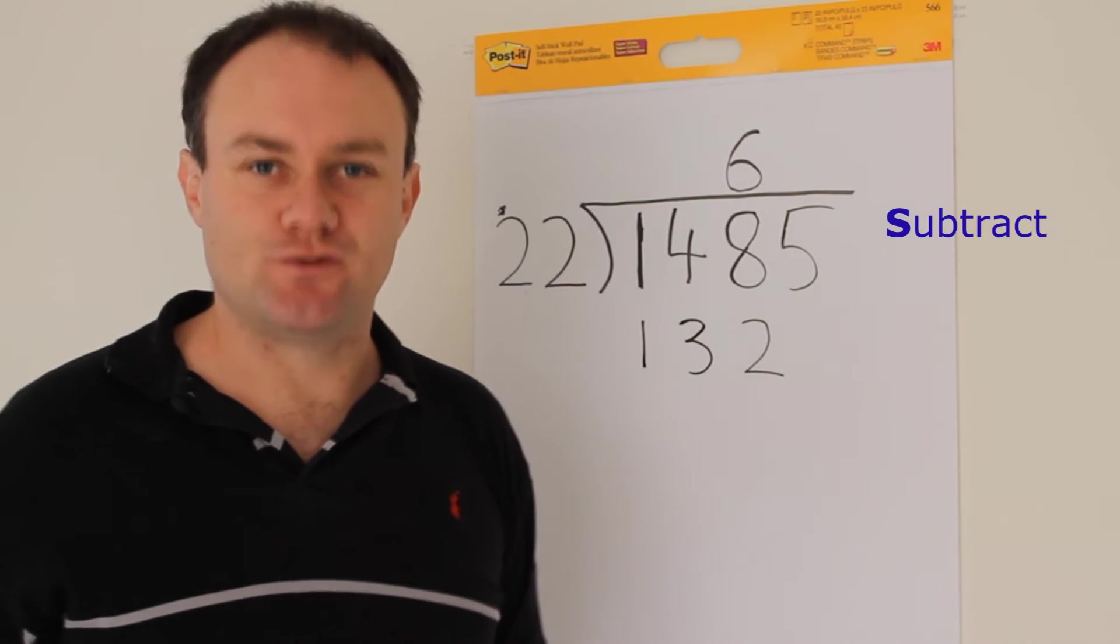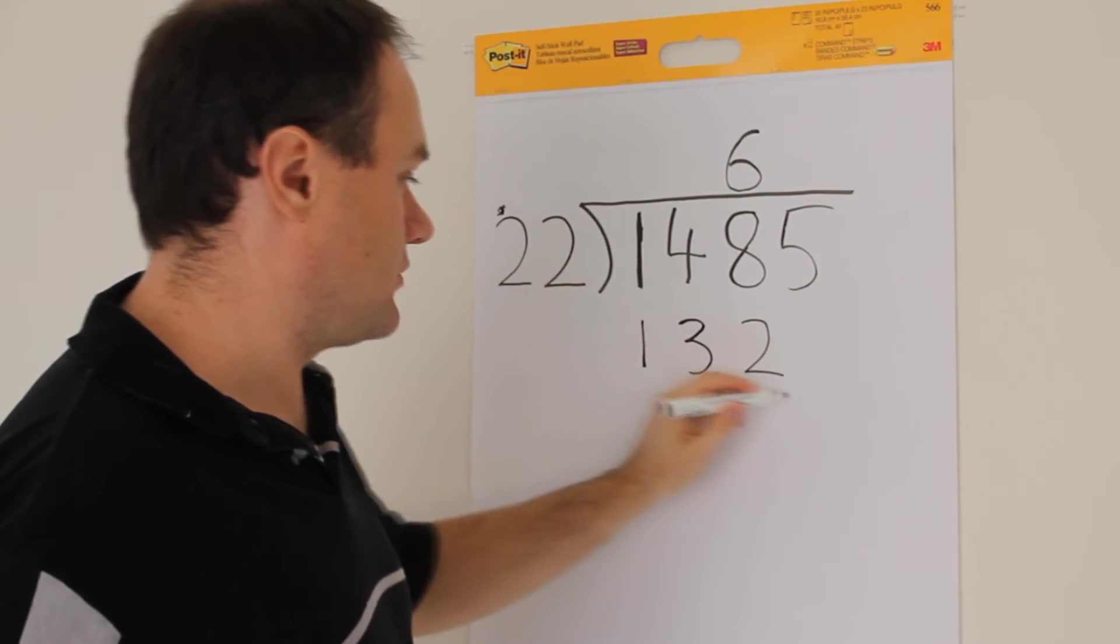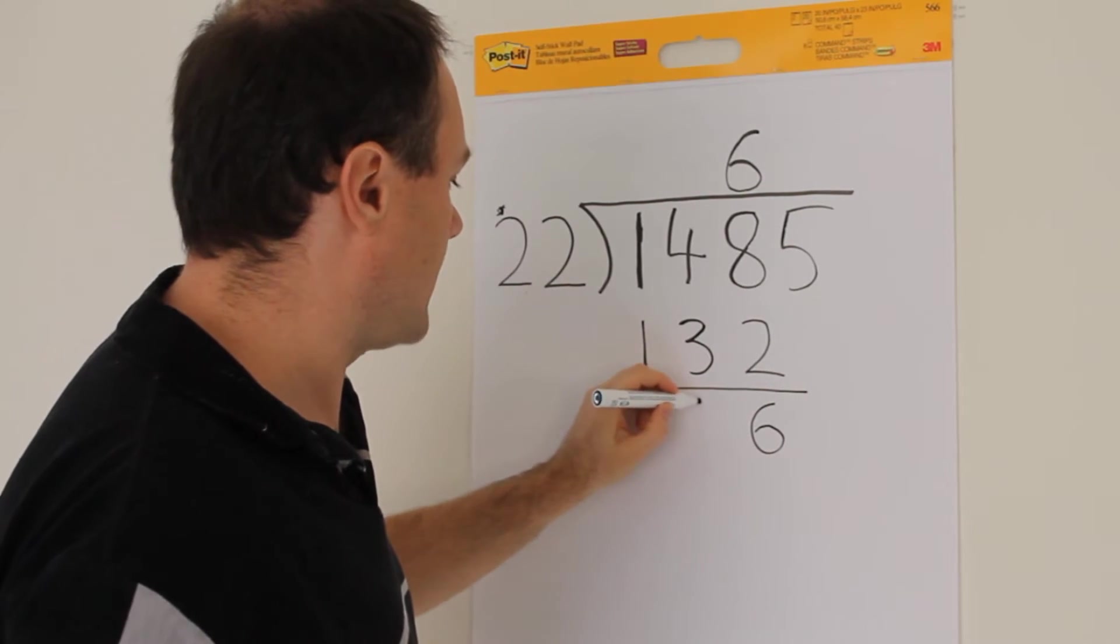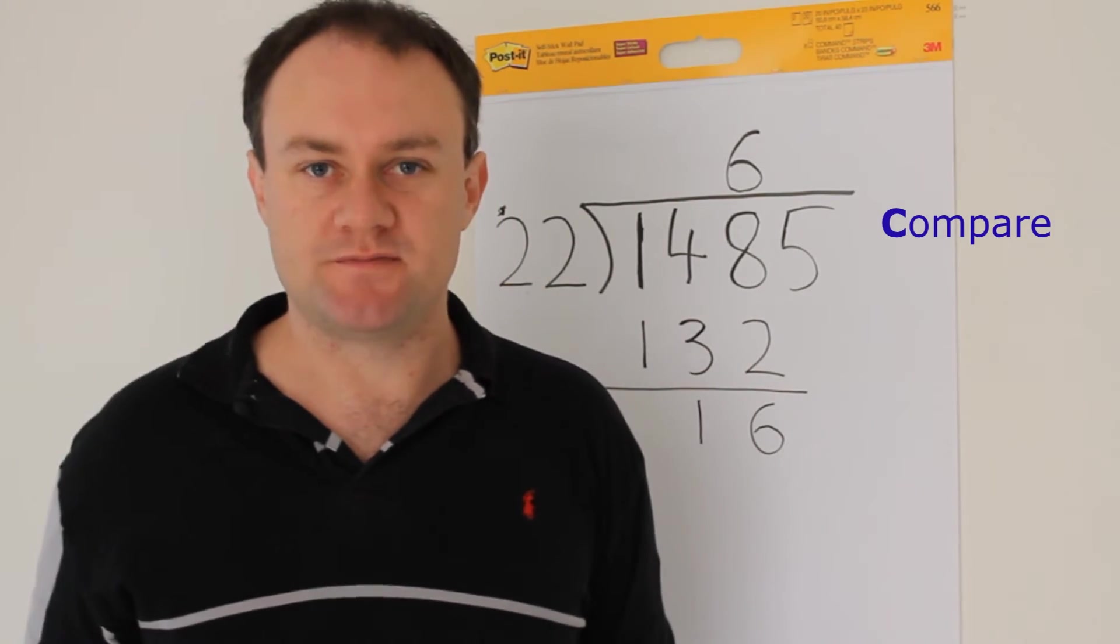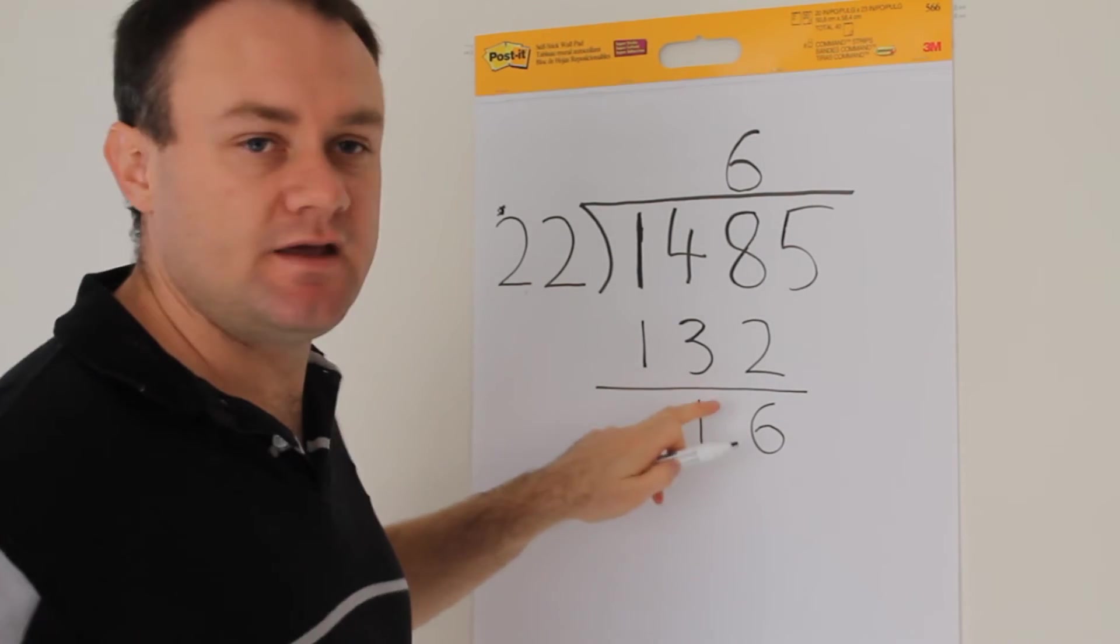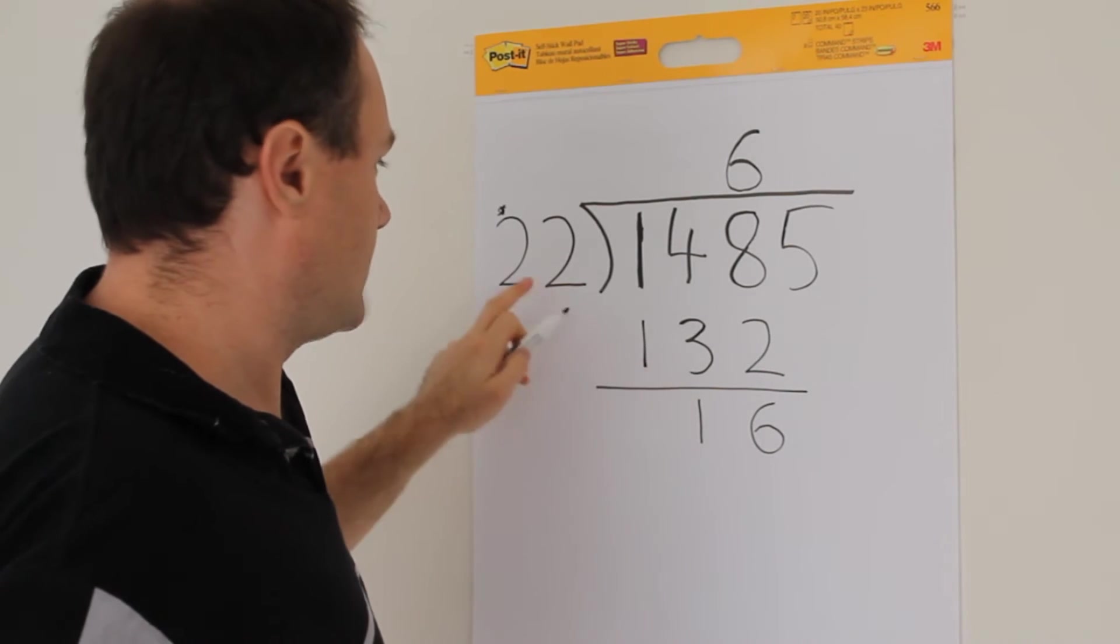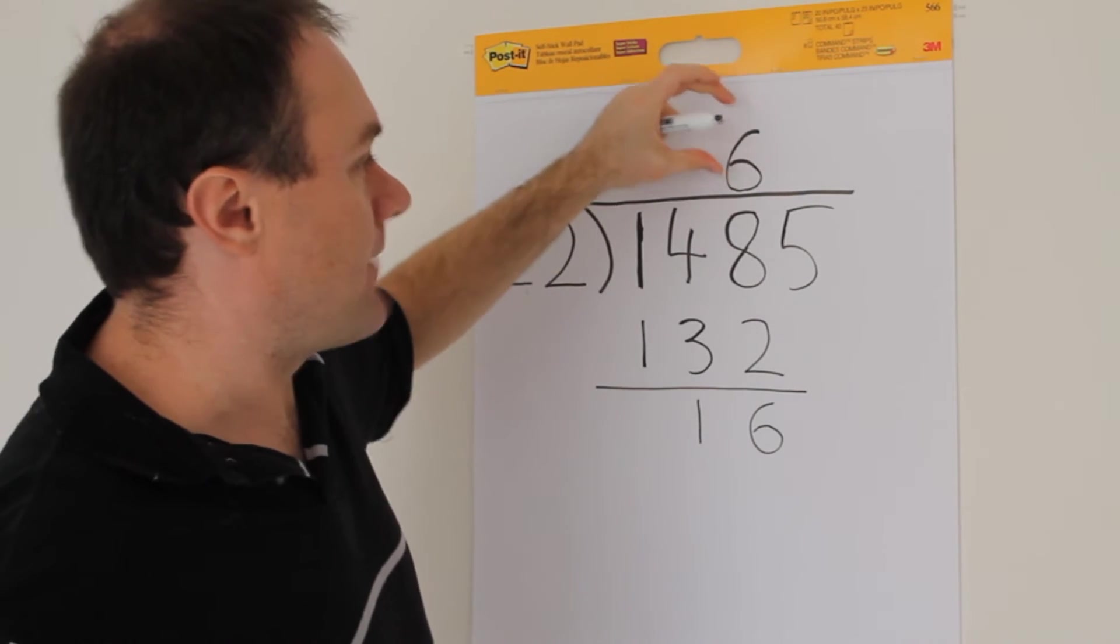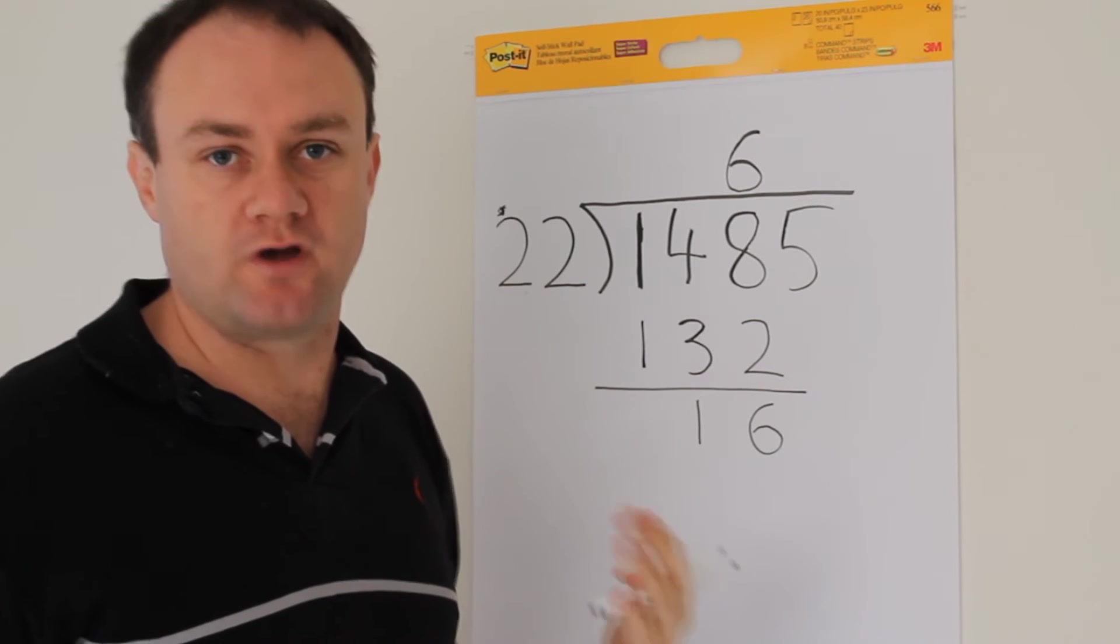Now we move to the subtraction step. 148 minus 132. Then you have 16 there and a 1 there. Now here is where the compare step becomes important. You want to make sure that this number here is not bigger than this number. Because if this number here was bigger than this number, it would mean that we haven't chosen a big enough number here, and we've got to go back and work through this process again.